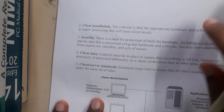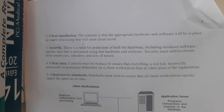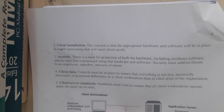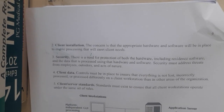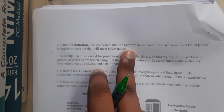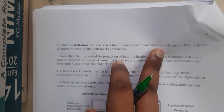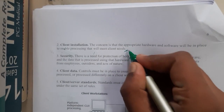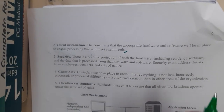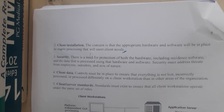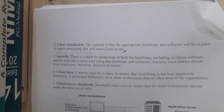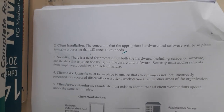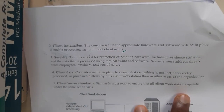The second concern is client installation. For example, if you built a website, the client does not require any special installations or hardware — just a proper browser. The concern is that appropriate hardware and software will be in place to enable the processes needed by the client. The software should be accommodable for everyone, running on any hardware with minimum requirements.